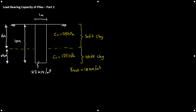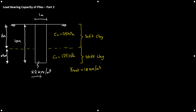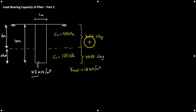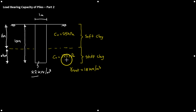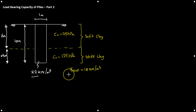The example we're going to be looking at: we have a 10 meter deep pile, 1 meter in diameter — again a circular pile. The unit weight of this pile is 22 kN per meter cubed. We have two layers. The first layer, 6 meters deep from the top, is soft clay with a cohesion of 25 kPa. The second layer, 4 meters from the bottom of the first layer, is stiff clay with a cohesion of 125 kPa. Both the soft and stiff clay have a saturated unit weight of 18 kN per meter cubed.